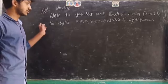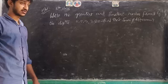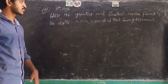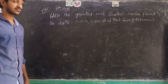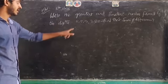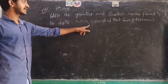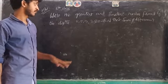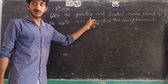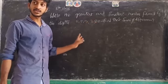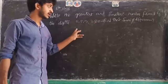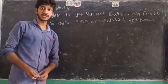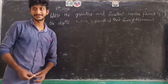Okay children, do this problem as homework: write the greatest and smallest numbers formed by the digits 8, 5, 9, 3, and 0, find their sum, and also find their difference. Thank you, children. Bye.